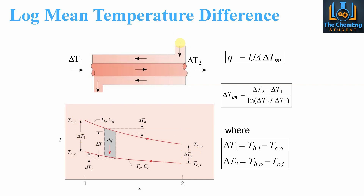In counter current flow, the cold stream comes in at one end, begins to heat up, taking heat from the hottest part of the system. It heats up gradually while maintaining a good delta T value throughout the heat exchanger, giving a more efficient heat transfer system. That's why most equipment in industry uses counter current flow — because we get a better delta T log mean value, as we don't have such a polarized temperature-distance profile.